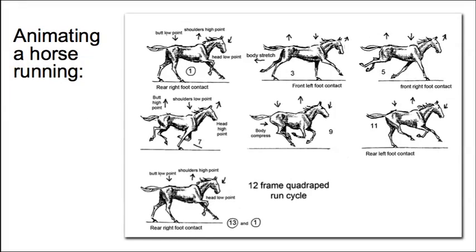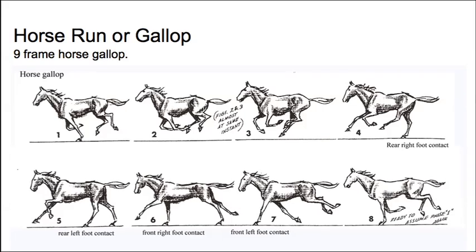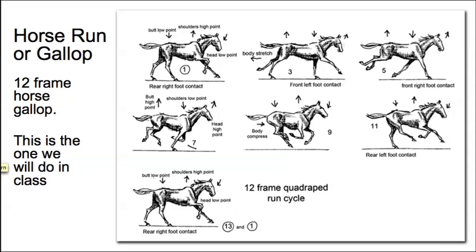Here's a nine-frame horse gallop, which would be a very rapid gallop. The twelve-frame one is a better option, and it enables us, as with the other run cycles, to do as few positions as possible.